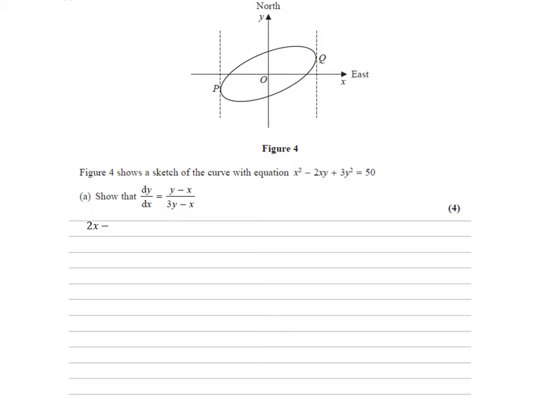Differentiating 2xy, we've got x times y so we're going to use the product rule here, which is the differential of one times the original form of the other, add those two the other way around. This gives us 2x times dy by dx plus y times the differential of 2x which is 2.